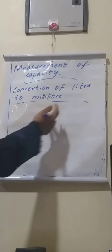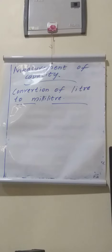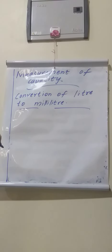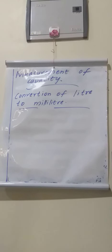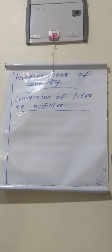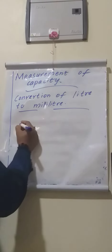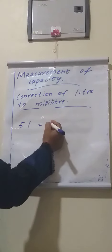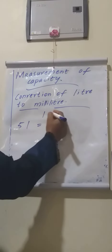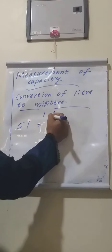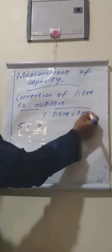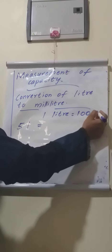Conversion of liter to milliliter. How we will convert liter to milliliter? It is a very simple method. We just multiply by thousand. Ok, listen — 5 liter. How we will convert to milliliter? 1 liter is equal to thousand milliliter.